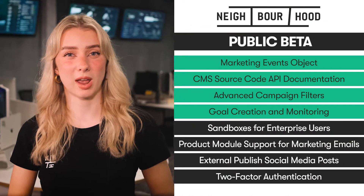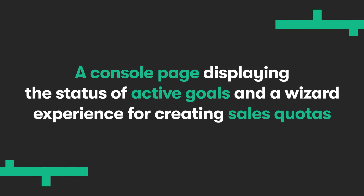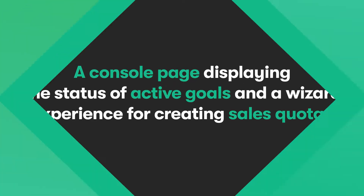Fourth on the public beta list is the new home for goal creation and monitoring. This is essentially a console page displaying the status of active goals and a wizard experience for creating sales quotas. With the new release, it will become easier for HubSpot users to create and monitor their HubSpot goals. Quotas can now be assigned to teams, not just individual reps. In addition, quotas can be assigned to quarterly and annual milestones, not just monthly.